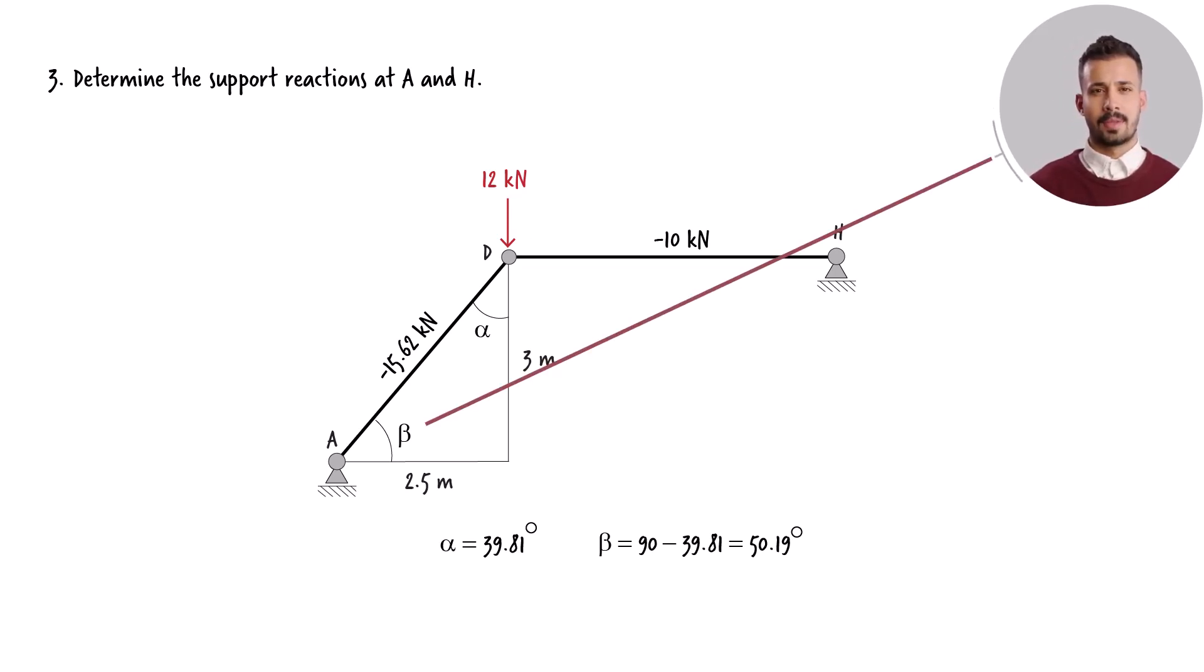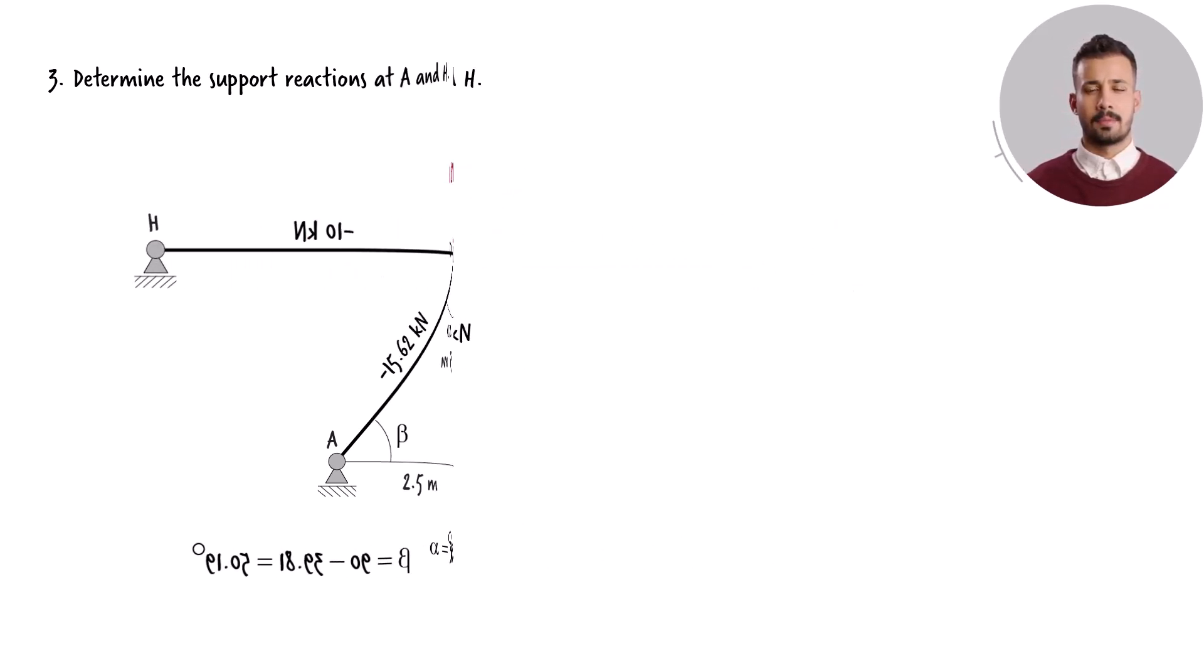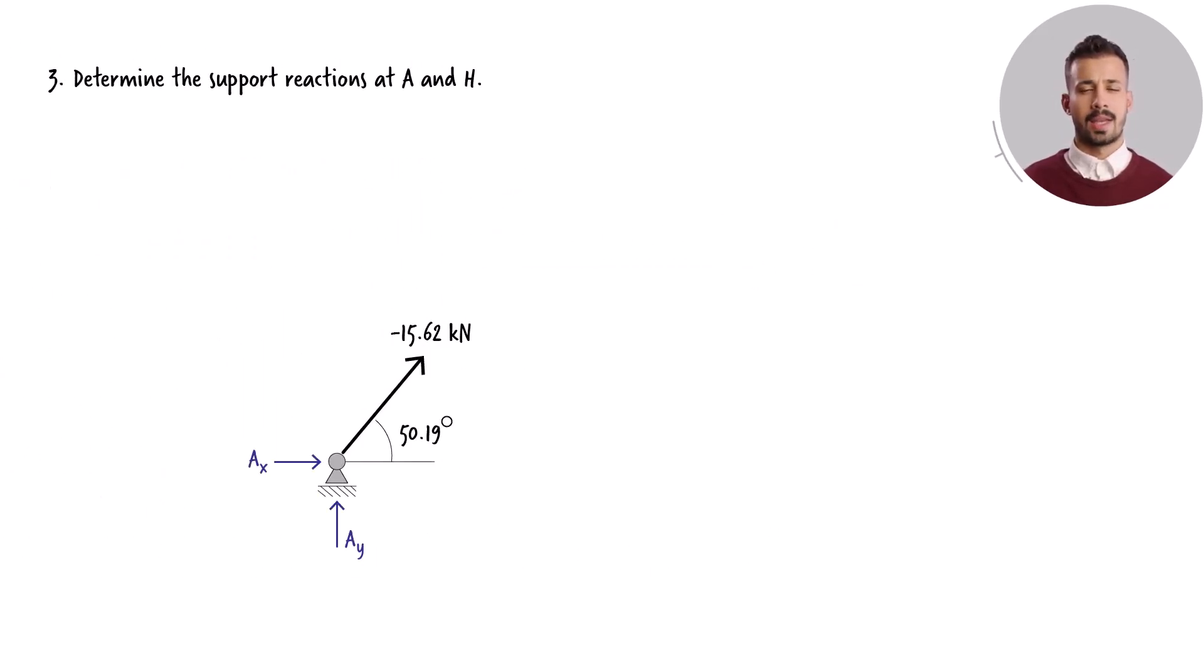Observe that angle beta is 50.19 degrees. Next, we'll determine the support reactions at joints A and H. This is the free body diagram of joint A. The equilibrium equations for this joint are shown. Upon resolving these equations, the unknown values are found.